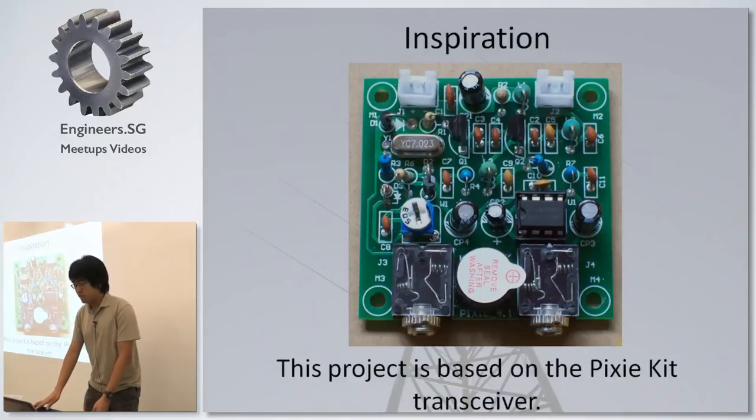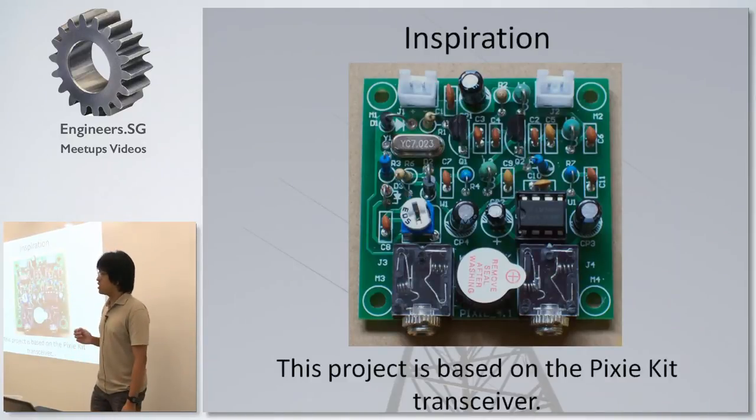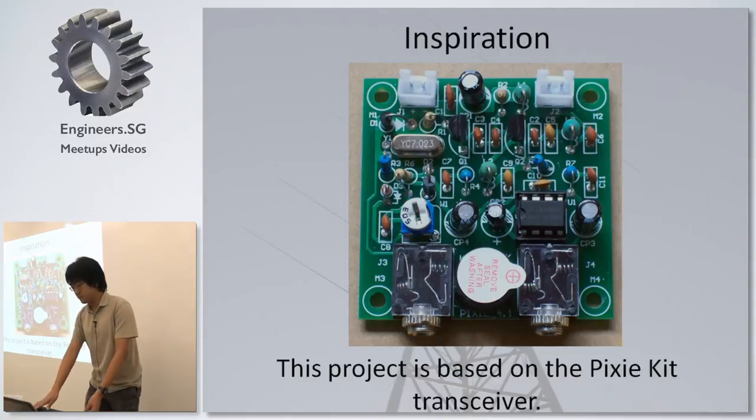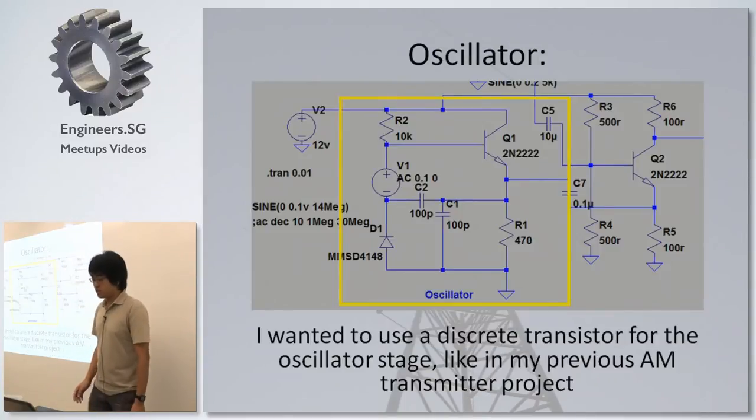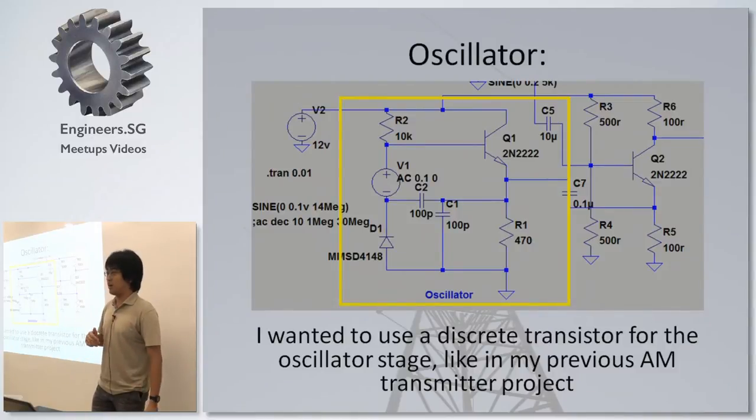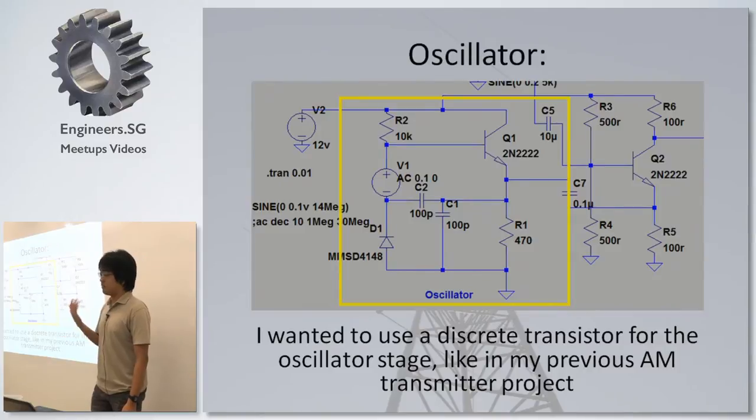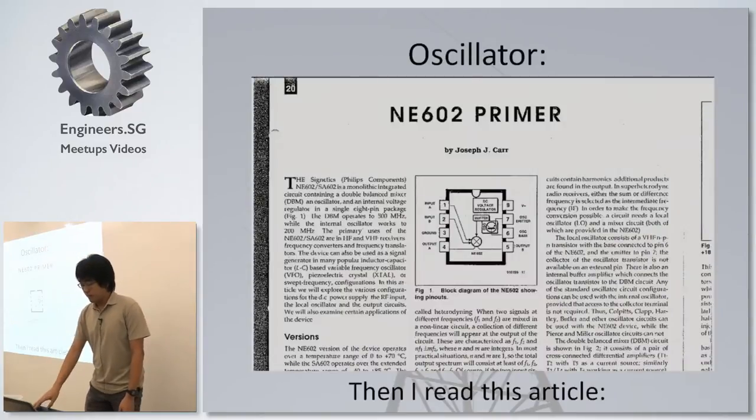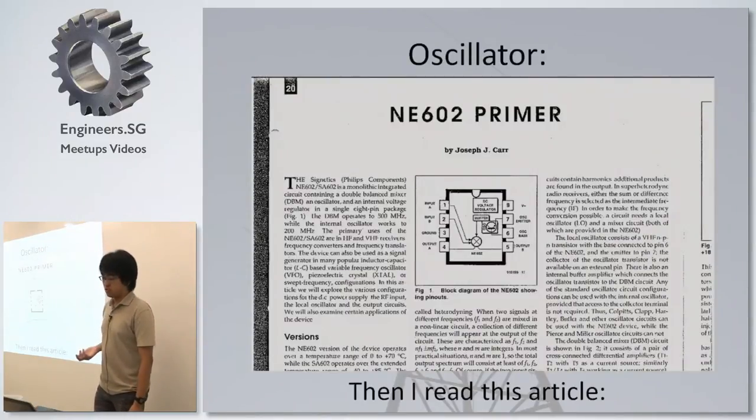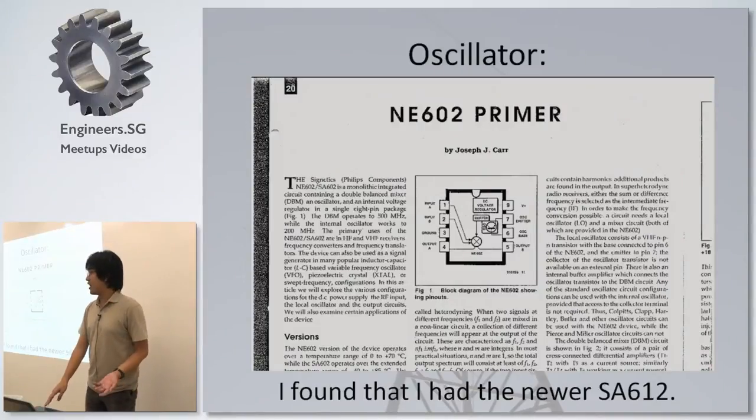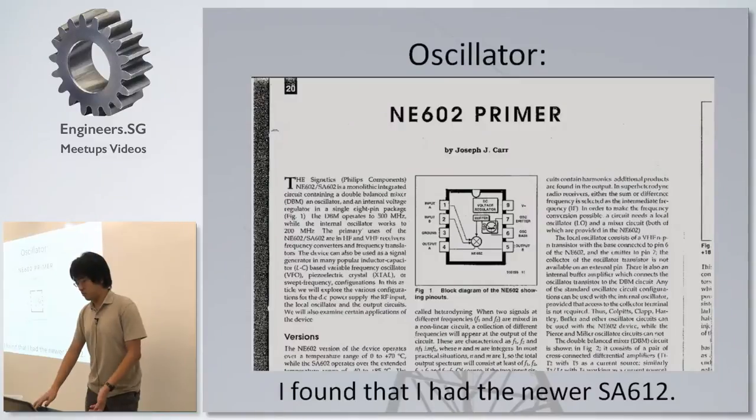This project is based off a PixieKit transceiver, which can be easily found online on eBay and such. I wanted to use a discrete transistor for oscillator stage, like how I did it for my amplitude modulation transmitter project a few months ago. But I read this article about the NE602, and since I had the SA612, which is a newer version of this chip, I might as well just use it.